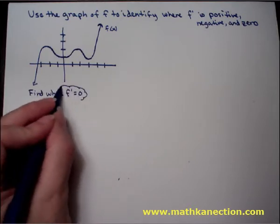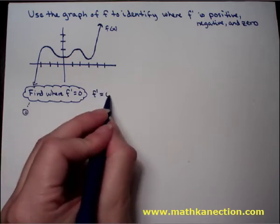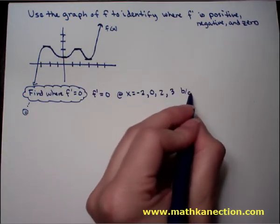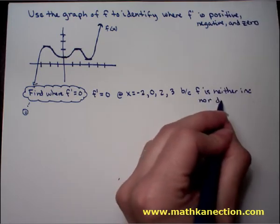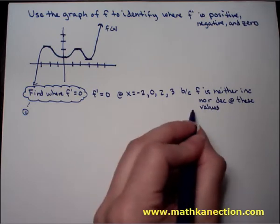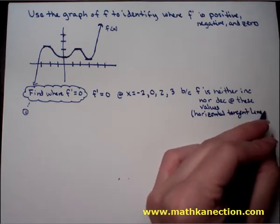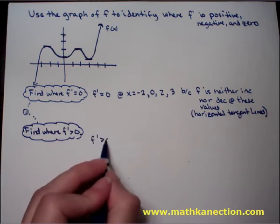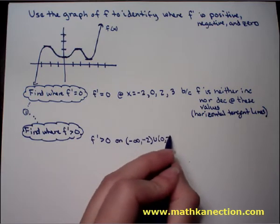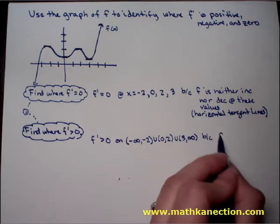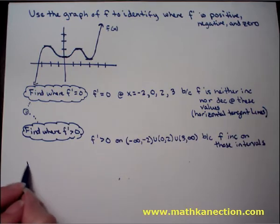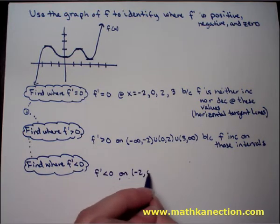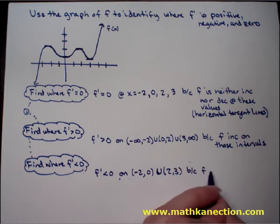In the next example, we find where f prime is positive, negative, and zero. Starting with when f prime equals 0: f prime = 0 at x = -2, 0, 2, and 3, because f is neither increasing nor decreasing at those x-values. Looking at the graph, we can see horizontal tangent lines at those values of x. f prime is greater than 0 on (-∞, -2) ∪ (0, 2) ∪ (3, ∞) because f is increasing on those intervals. f prime is less than 0 on (-2, 0) ∪ (2, 3) because f is decreasing on those intervals.